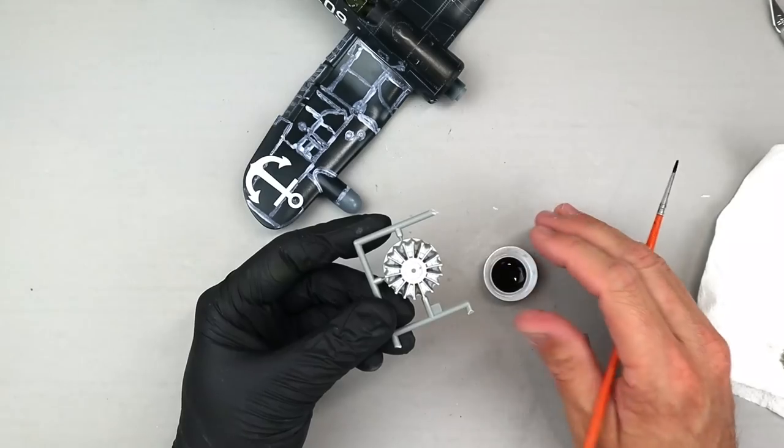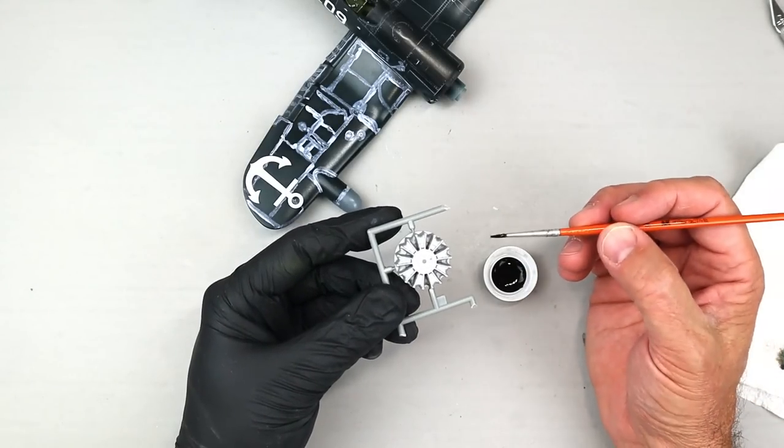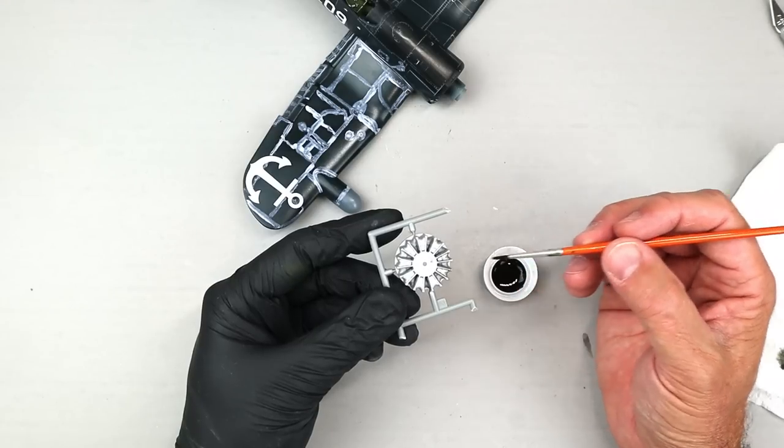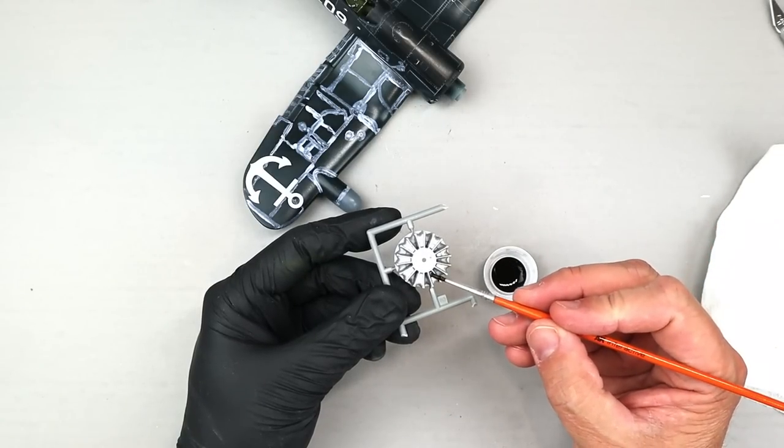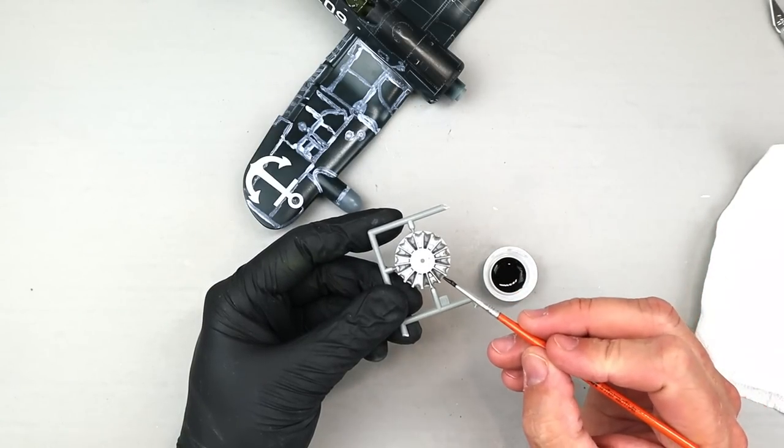I like to keep things moving, so while I waited for the panel line wash to dry in some areas, I airbrushed the engine cylinders with Tamiya aluminum and then applied a dark oil wash to bring out all of the details.